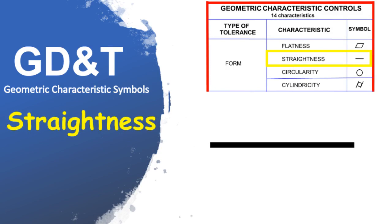Straightness is a two-dimensional geometric tolerance. It is a condition where one line element of a surface or an axis must lie in a straight line. Surface straightness is called out on the surface of the part; axis straightness is called out next to the size dimension of the axis. Straightness is used to indicate the warpage tolerance of long objects.